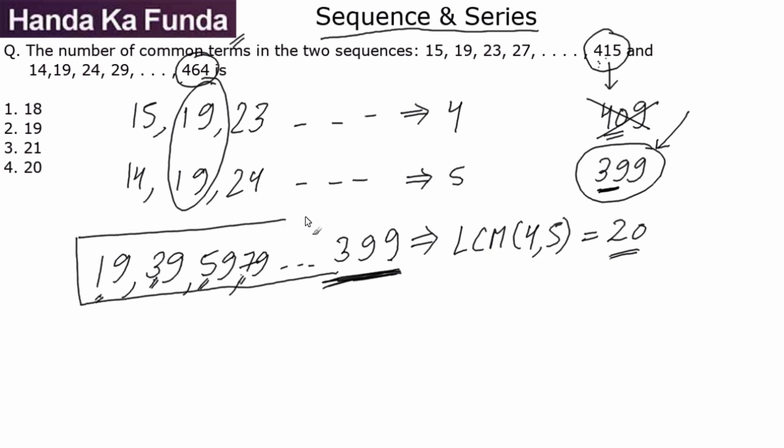The question is we have to find out the number of common terms. Whenever you are given an AP, the number of terms can be found out by the formula: last term minus the first term by the common difference plus 1. So the last term here is 399, the first term here is 19, common difference is 20, plus 1 will be my answer.